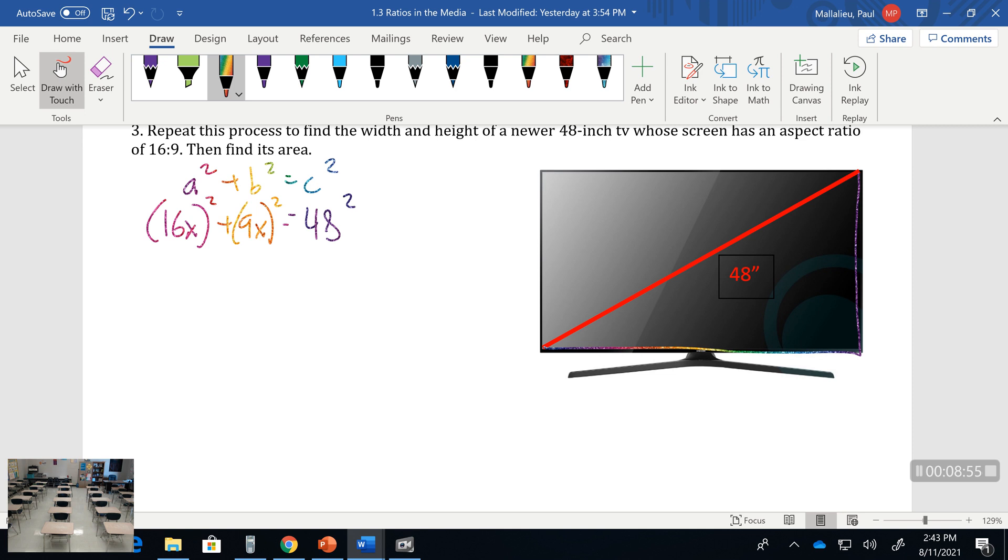16² is 256X², 9² is 81X², and we know 48² from the hypotenuse. We combine like terms so we have 337X² equals 48², which is 2,304.